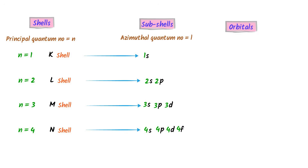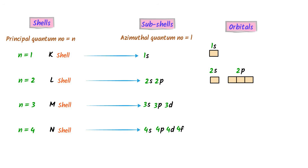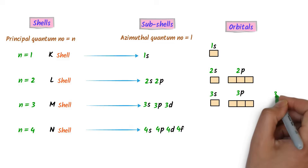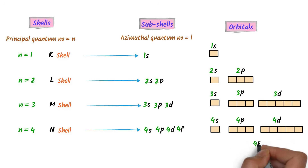What about their orbitals? 1s has one orbital, 2s has one orbital, 2p has three orbitals. Similarly, 3s has one orbital, 3d has five orbitals. 4s has one orbital, 4p has three orbitals, 4d has five orbitals, and 4f has seven orbitals. Let us note down this complete concept of shells, subshells, and orbitals.